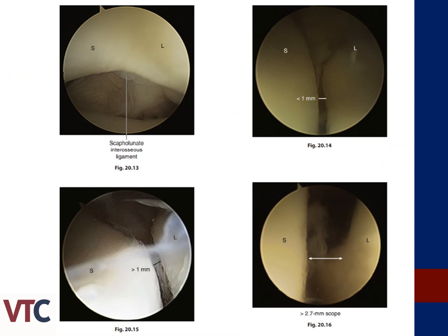These images represent the Geissler classification for wrist interosseous ligament instability. The top left image demonstrates a Geissler Grade 1, which represents no incongruity or instability. As a recall to one of our prior slides, you can identify the radioscapholunate ligament as it merges with the SL interosseous ligament. A Grade 2 is represented in the top right picture as evidenced by a less than 1 mm gap. A Geissler Grade 3 is a greater than 1 mm gap shown in the bottom left, and the bottom right represents a Geissler Grade 4, otherwise called the drive-through sign.